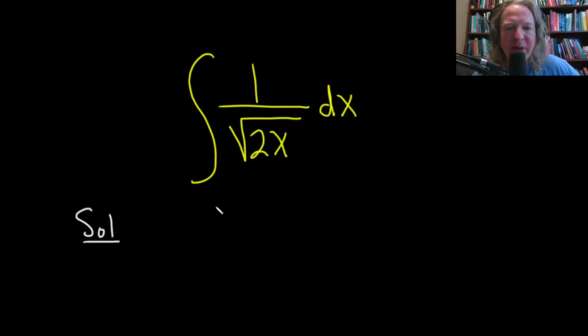We'll start by making a u substitution. We're going to let u be the inside piece here. So u is equal to 2x. And then we'll take the derivative of both sides. So we have du equals, and then the derivative of x is 1, so this is 2 dx.